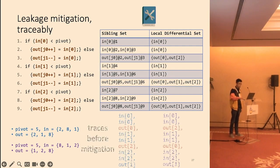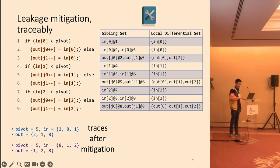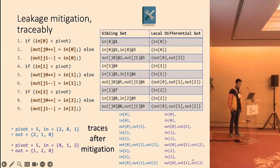Let's convince ourselves that the hardened program is now secure. Looking at the trace before, different input induces different traces which leak information. After mitigation, the program produces the same traces regardless of the input. What the attacker sees is a sequential access to the local differential set, which they already know since they have the source code.